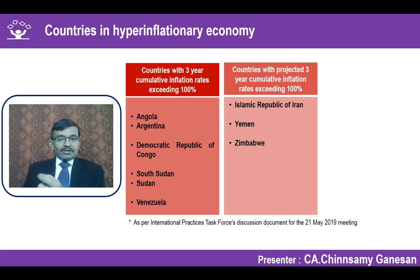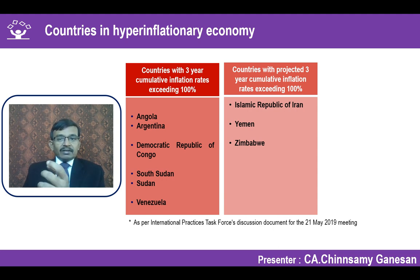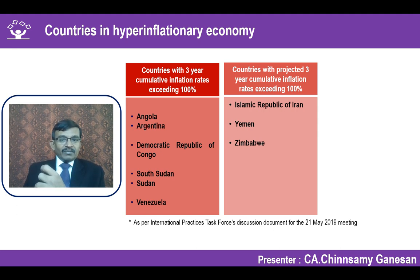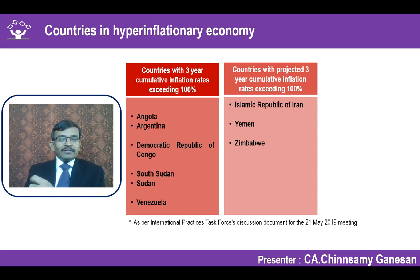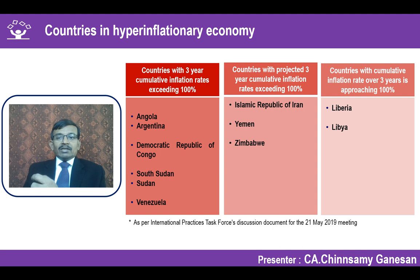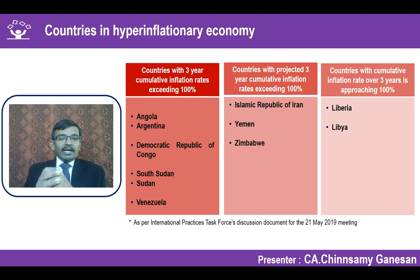Countries projected to reach cumulative inflation exceeding 100% include the Republic of Iran, Yemen, and Zimbabwe. Countries approaching that 100% level — somewhere around 70–80% — include Liberia and Libya. This list serves as a ready reckoner for identifying which investments should be restated in accordance with Ind AS 29.